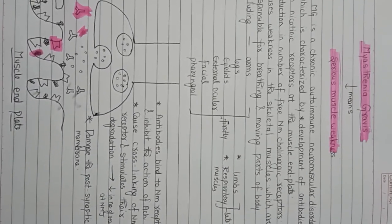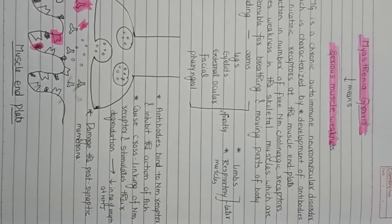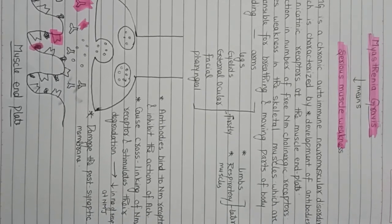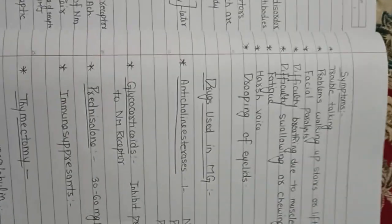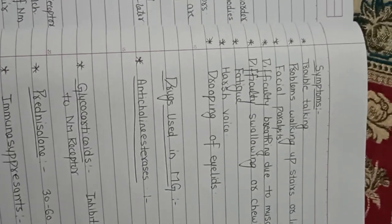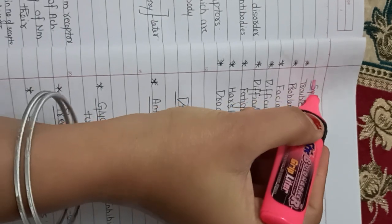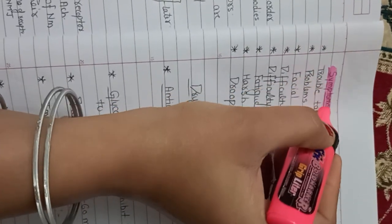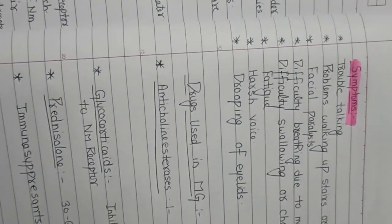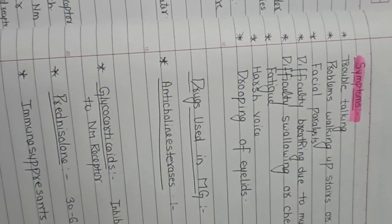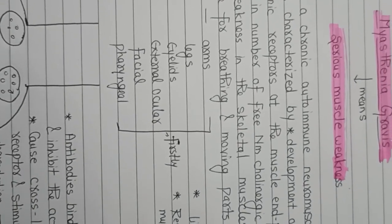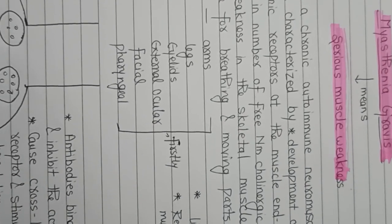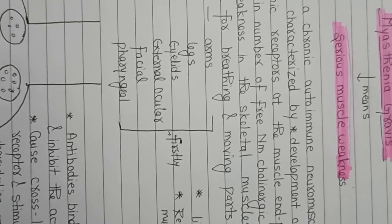So today we will talk about the symptoms of myasthenia gravis — how does it affect our muscles? In myasthenia gravis, muscle weakness occurs. Which muscles are weak? Arms, legs, eyelids, external ocular, facial, and pharyngeal muscles are affected.